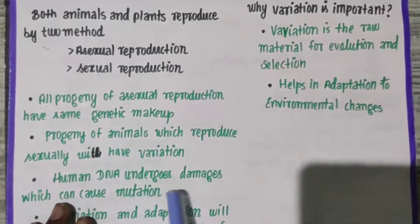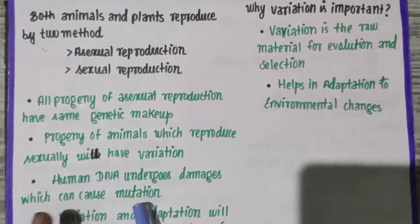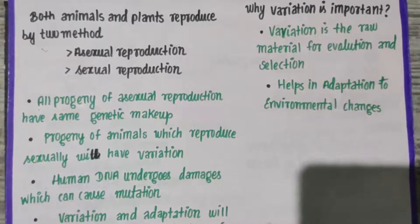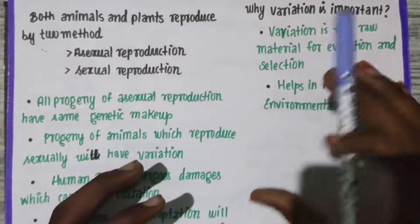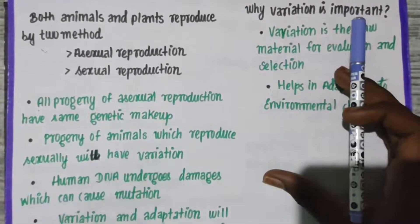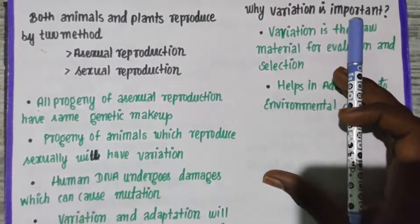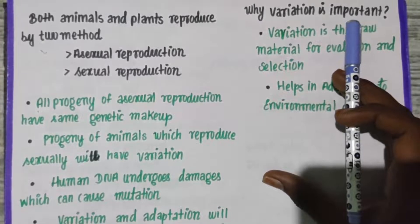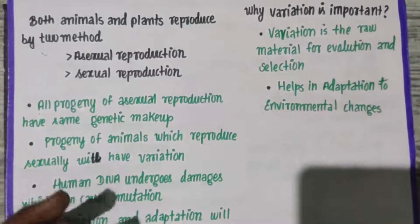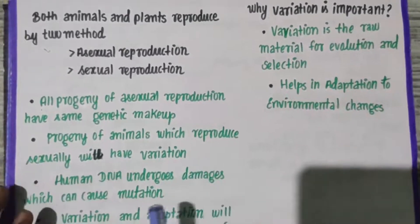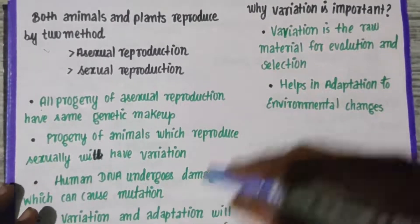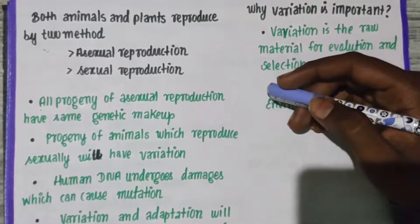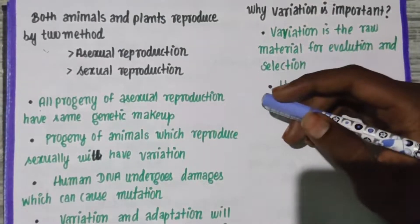Human DNA undergoes damage which can cause mutation. Mutation is a change in DNA sequence. In the nucleus, we have chromosomes, and in chromosomes we have DNA. DNA will undergo mutation — a change in its sequence.